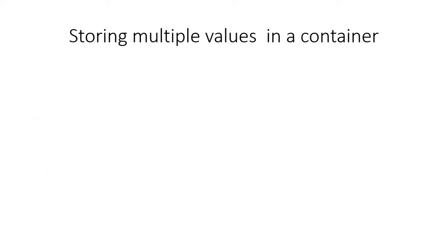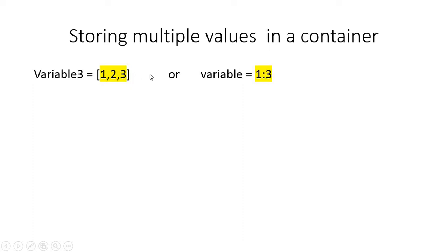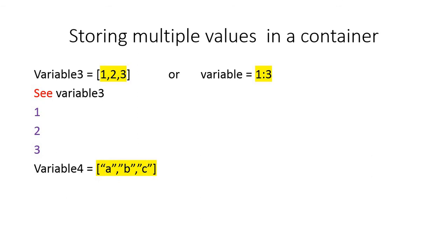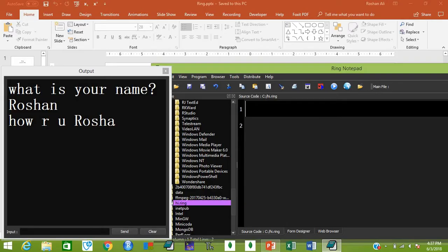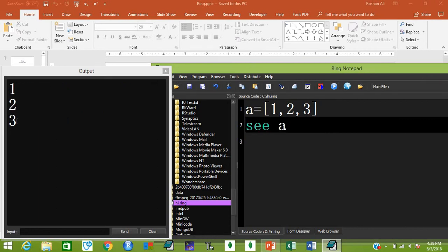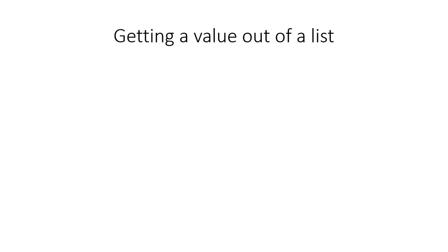You can store multiple values in a container using brackets: 'variable3 = [1,2,3]', or using colon notation: 'variable = 1:3'. When printed, the values appear vertically. This is called a list. You can store character or mixed values too. To get a specific value from a list, use 'c a[3]' — this gets the third value. Ring is case-insensitive, so 'a' and 'A' are identical.